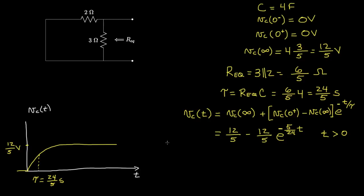That's an example with a relatively simple circuit. In subsequent lectures, we'll look at more complicated circuits that involve one capacitor with voltage/current sources and resistors.